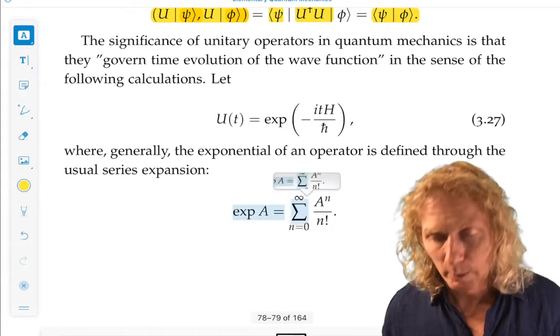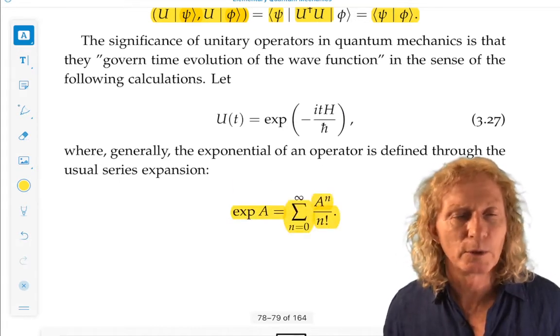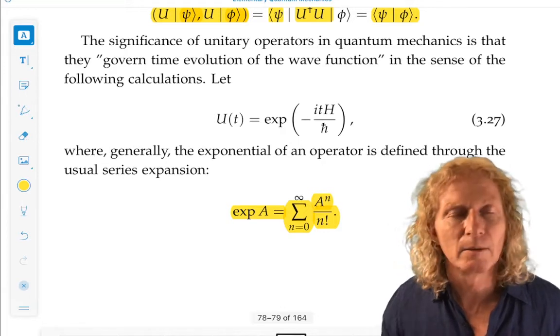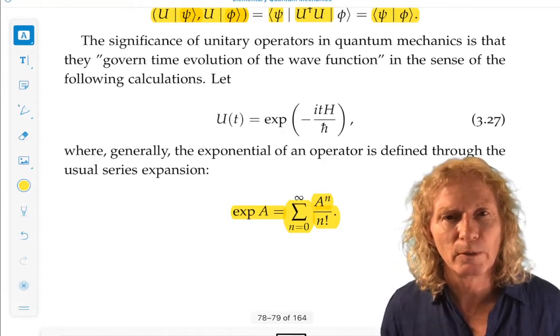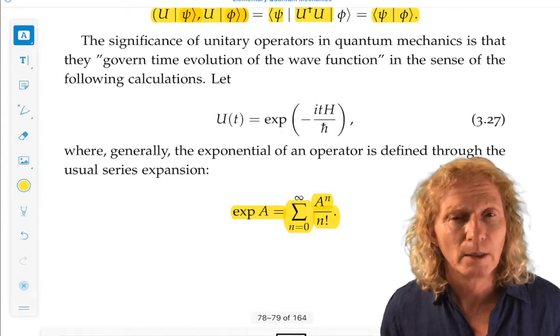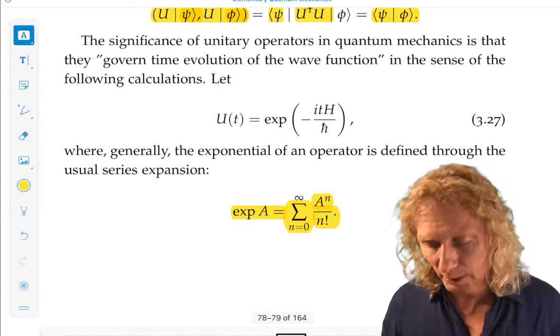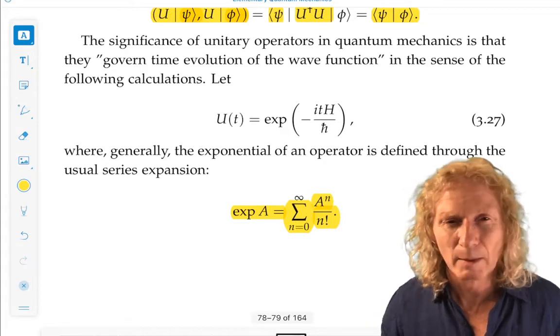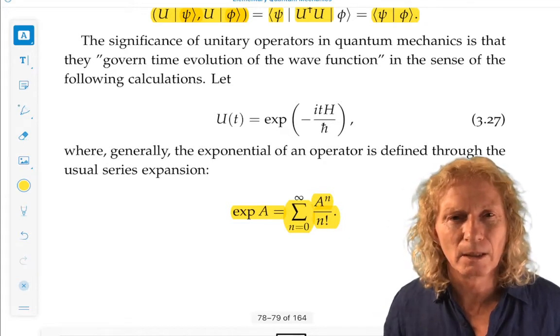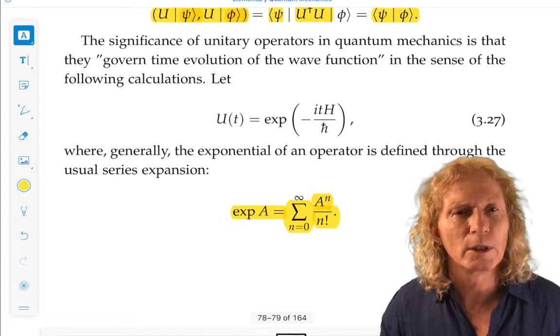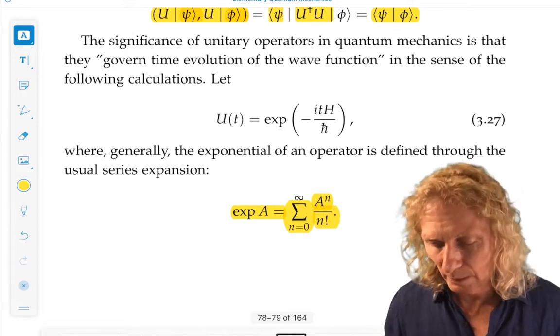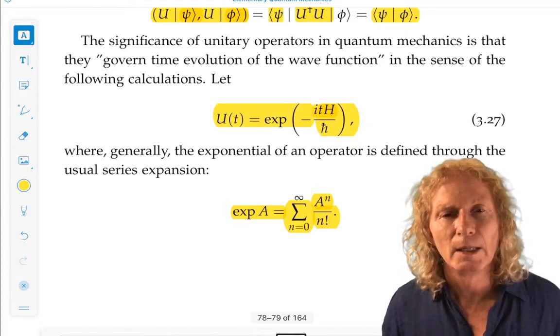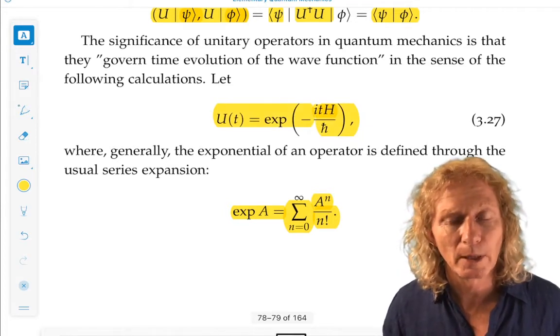Whenever you have an exponential of something other than a number, you still understand it in terms of the exponential series. So one can show that if the operator is bounded, which will be true for finite dimensions, this series converges in a nice sense. I'm not going to go into that detail and prove that here. I just want to use this operator, and mostly when we say use it, we're going to use it in the exponential series, term by term.